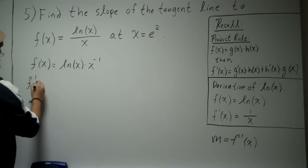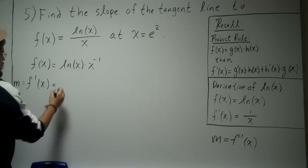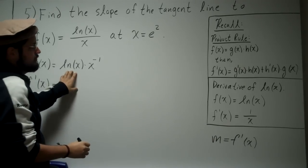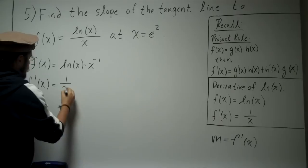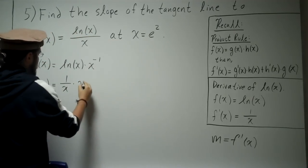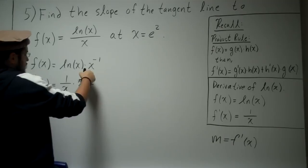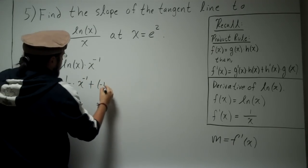So then we know f'(x). Now we're doing the calculus. Okay, so the derivative of ln(x) is 1 over x times just h, that's going to be x to the negative one, plus the derivative of x to the negative one, that's negative one,